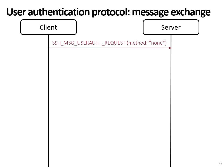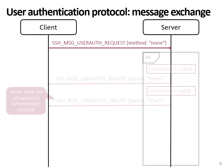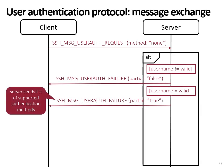How does it work? First, the client sends a user authentication request without specifying any method for user authentication, but does include a username. If the username is invalid, the server sends a failure message and authentication stops. If the username is valid, the server also sends a failure message but states that authentication partially succeeded using the partial flag, and lists possible methods that can be used for further authentication.